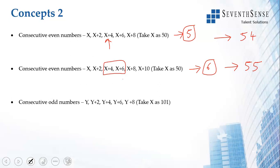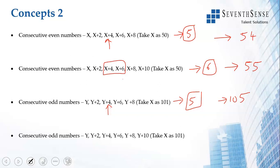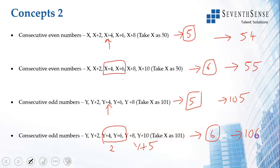Similarly for consecutive odd numbers: if the count is odd — say 5 numbers starting at y=101: 101, 103, 105, 107, 109 — the average is the middle number y+4, which is 105. If the count is even — say 6 consecutive odd numbers — the average is (y+4 + y+6)/2 = y+5, giving 106.